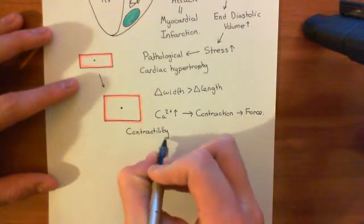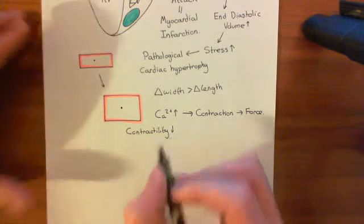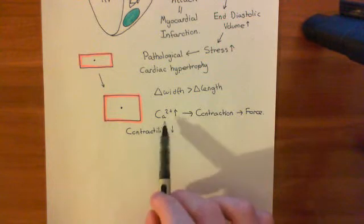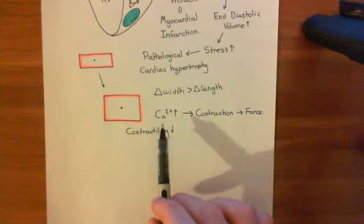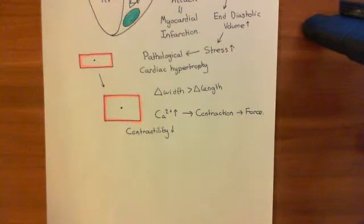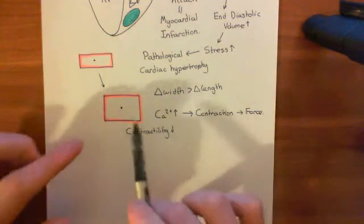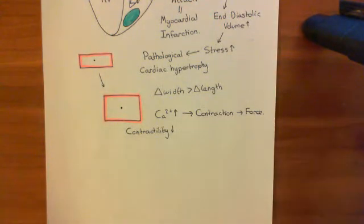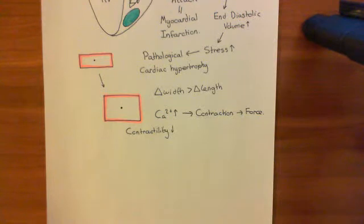So contractility is reduced — the amount of force the cardiomyocyte is capable of generating in response to a certain calcium signal is reduced. In the short run they will generate more force, but in the long run these cardiomyocytes stop contracting with as much force.